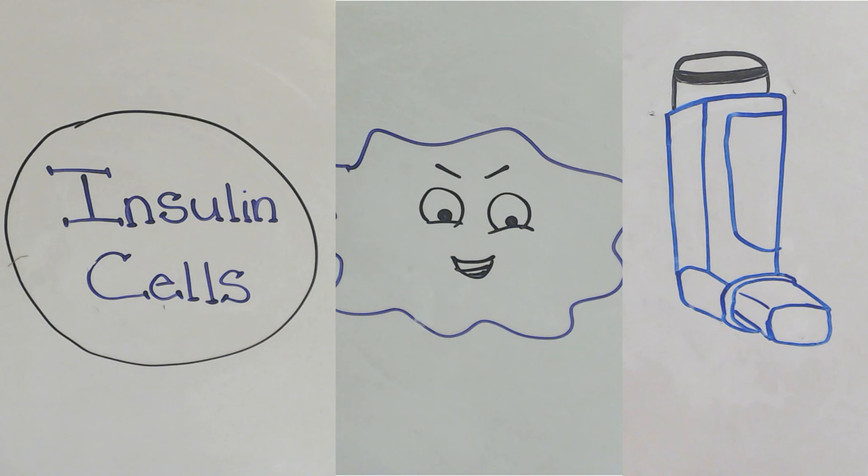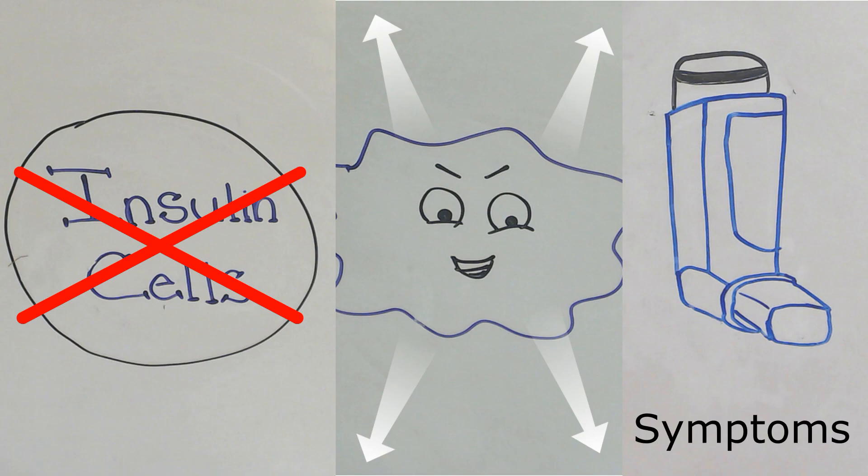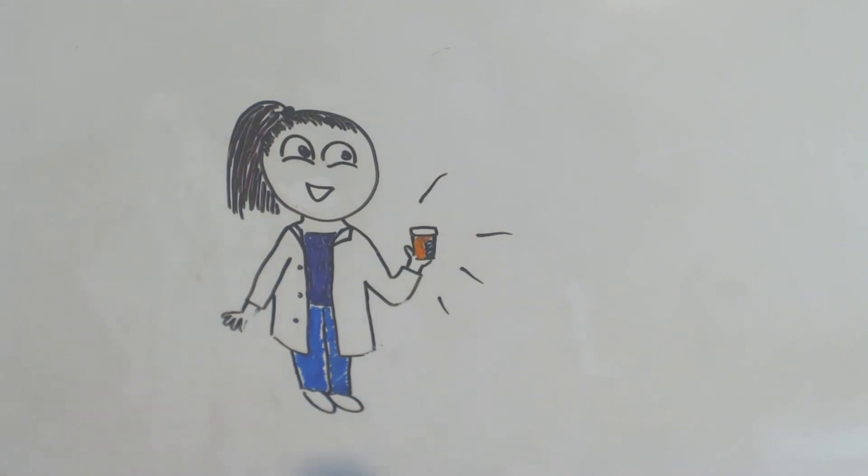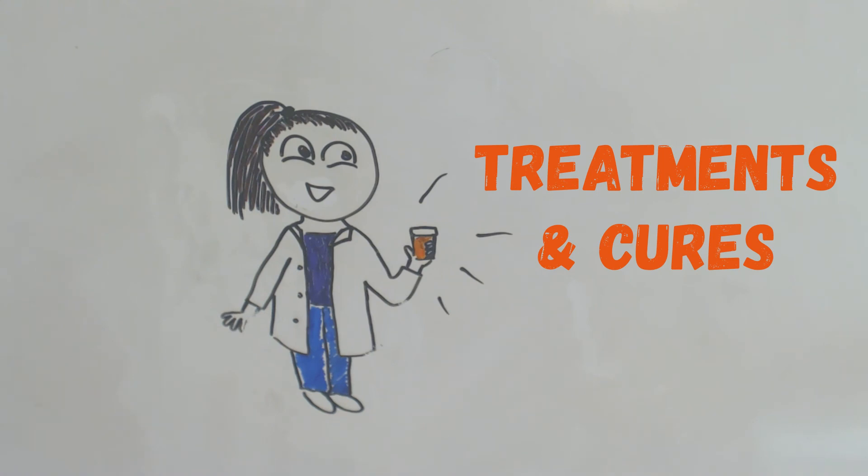In diabetes, insulin cells die from protein folding glitches. In cancer cells, the UPR is wired to help grow more cancer cells, and UPR has been implicated in asthma symptoms. By creating drugs to alter the UPR, we may just find treatments and cures for many diseases.